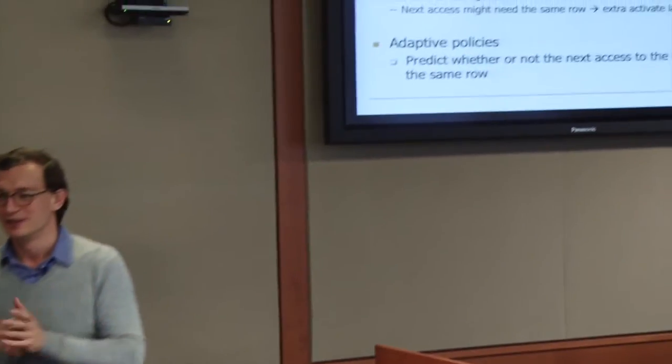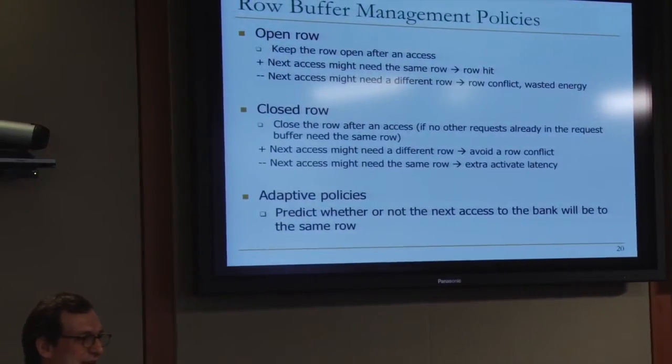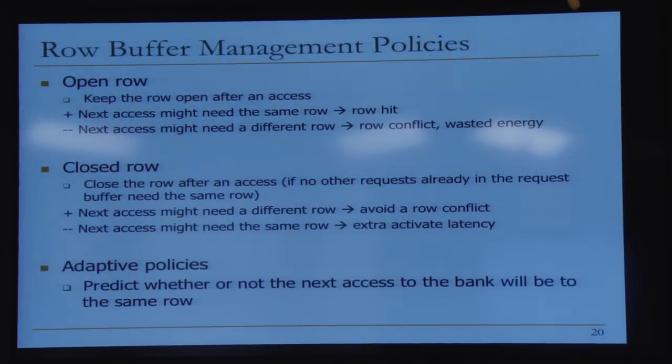Sometimes open row is better, sometimes closed row is better — how do you get the best of both worlds? Predict. Some memory controllers today have adaptive policies that try to predict whether or not the next access to the bank will go to the same row. This is not a hard predictor to design: if your accesses are going to cache block A, A+1, A+2, A+3, all in the same row buffer, you predict the next access goes to the same row. One other way is just keeping track of your row buffer hit rate — if it's close to 10%, do the closed row policy; if it's over 80%, do the open row policy. This gives an idea of how you can design an adaptive policy.